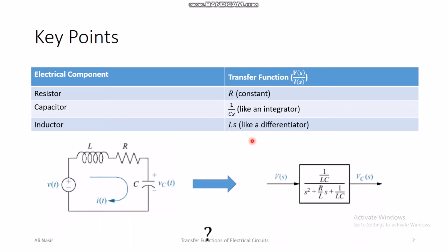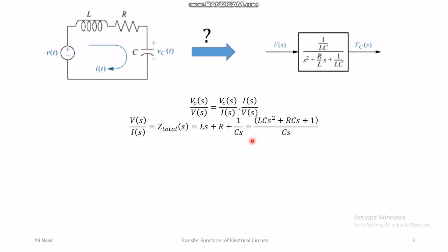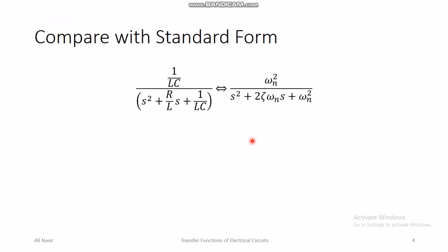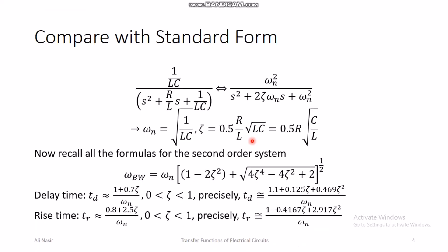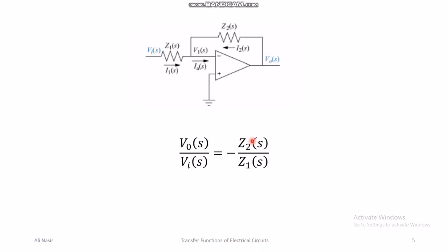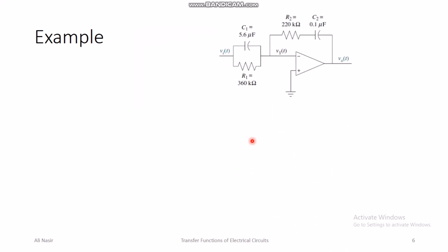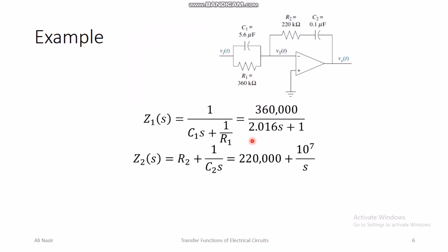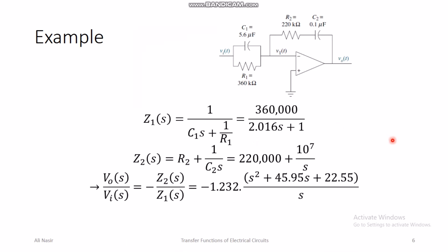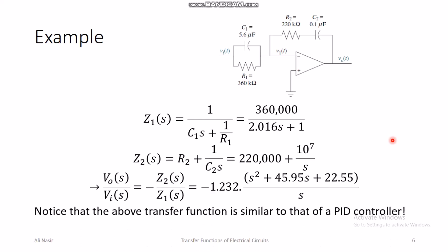Once you are comfortable with the impedance table — R for a resistor, 1/(Cs) for a capacitor, and Ls for an inductor — you can do all types of circuit analysis and calculate transfer functions between different signals. You can solve circuits with multiple loops, perform mesh analysis, and handle any RLC circuit. Hopefully this was useful — let me know if you have any further questions. Thank you for watching.